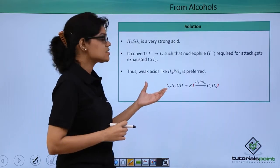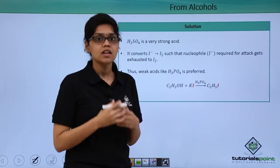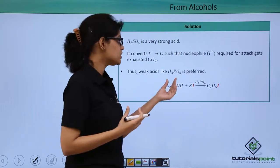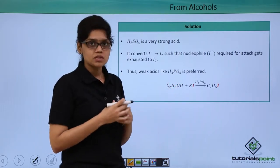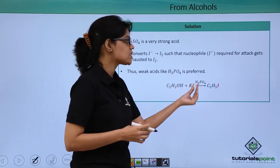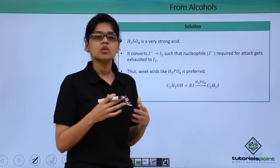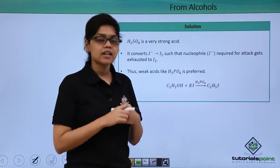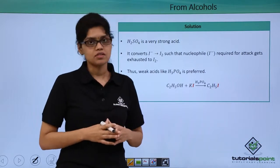In that case, we can see that since this is a nucleophilic substitution reaction, we need a nucleophile to attack the protonated alcohol. In this case, since all the I minus gets converted to I2, there won't be any more nucleophile left and in that case, all the I minus gets exhausted.